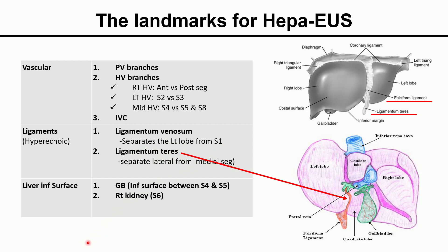The liver inferior surface landmarks are the gallbladder and right kidney. The gallbladder is close to the S4 and S5 segments. The right kidney is in contact with S6.